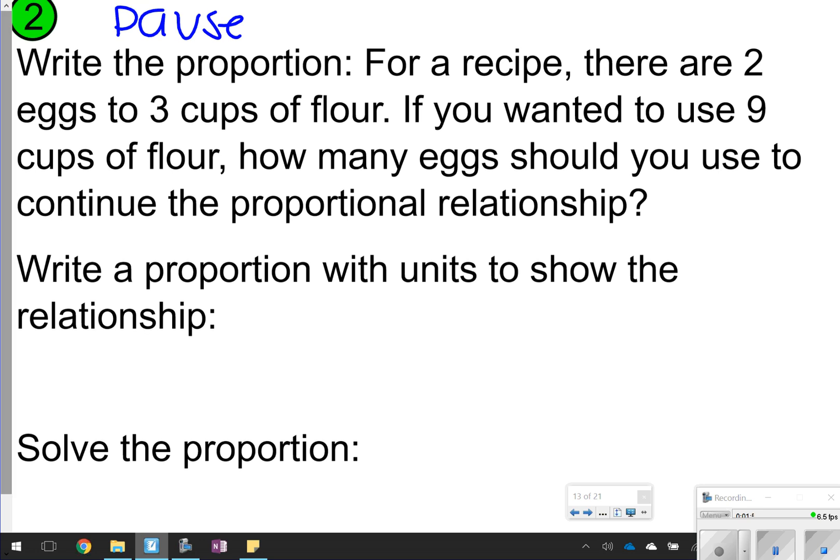So number two says to write the proportion for a recipe, there are two eggs to three cups of flour. So that's your very first rate. So what I always like to do is find my rate with the numbers and units that go with one another, and go ahead and write it. Two eggs and three cups of flour. I'm just going to say C-F-L for cups of flour.